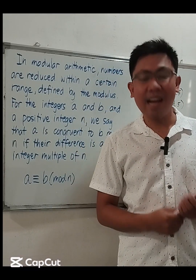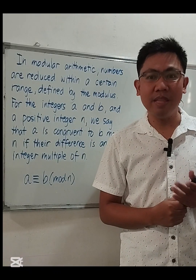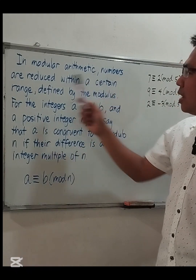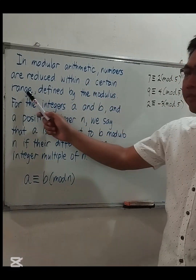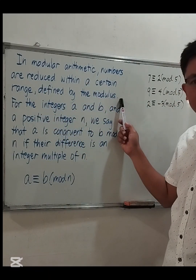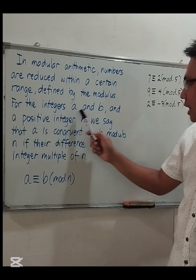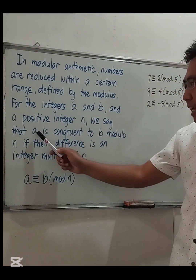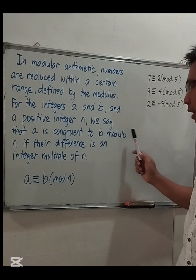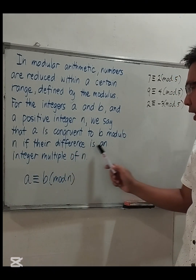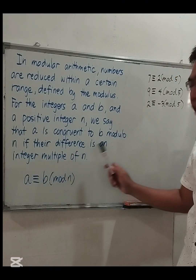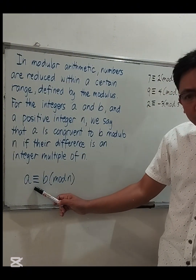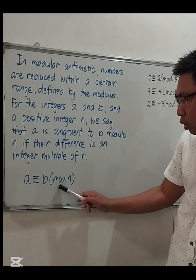Hi everyone, let us discuss modular arithmetic. In modular arithmetic, numbers are reduced within a certain range defined by the modulus. For integers a and b and a positive integer n, we say that a is congruent to b modulo n if their difference is an integer multiple of n. This is denoted as a is congruent to b modulo n.